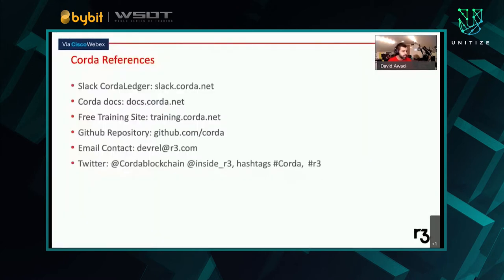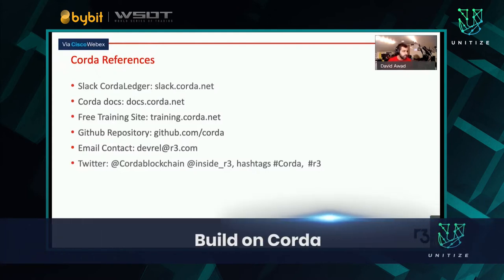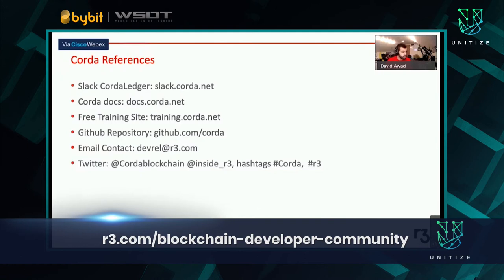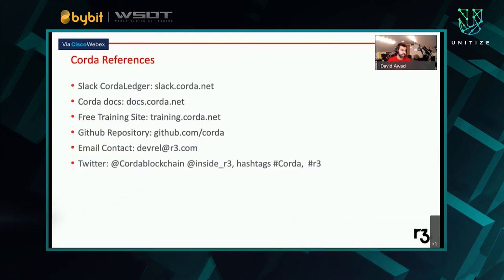To start, we have a whole lot of references for you. You can find people like me and Peter and the other developer evangelists on our public Slack channel. You can also find the docs. We've recently launched a new training site at training.corda.net. You can find our GitHub repository at github.com/corda. Corda is open source. For questions, email devrel@r3.com. You can also find us on Twitter at Corda blockchain and at inside r3 with the usual hashtags.